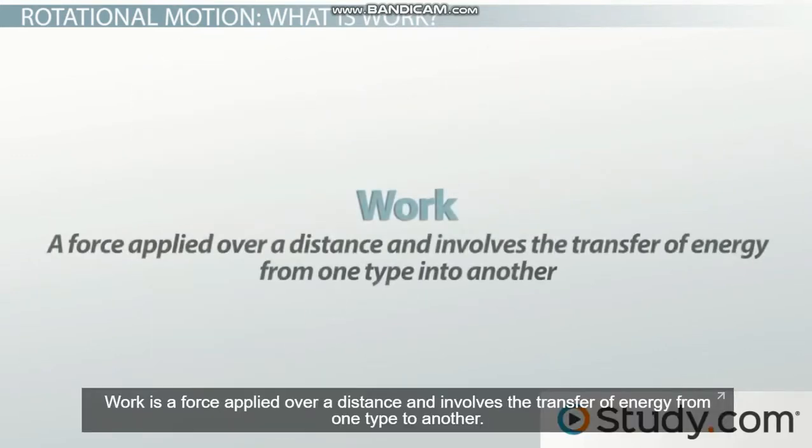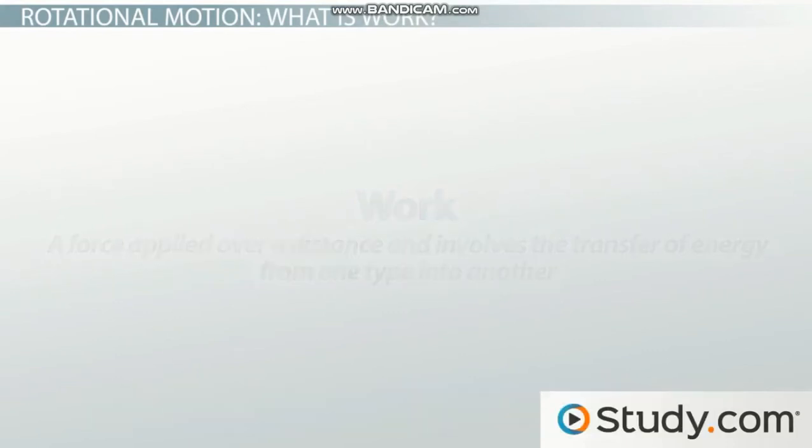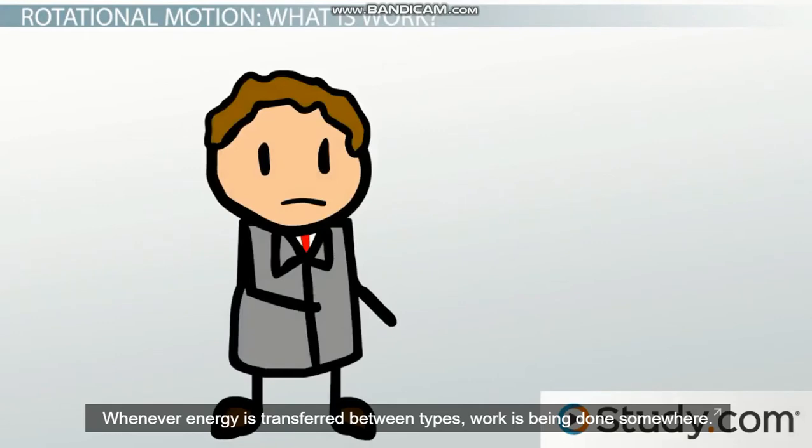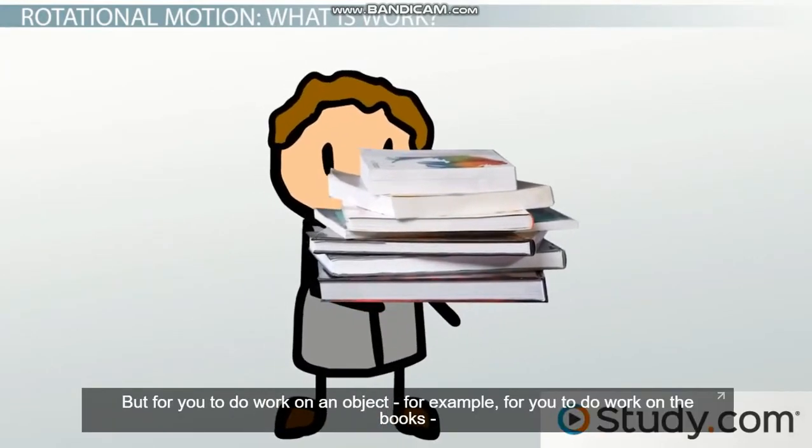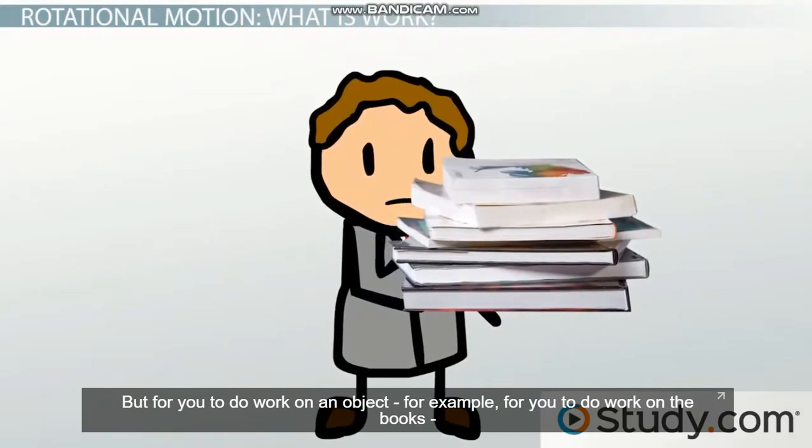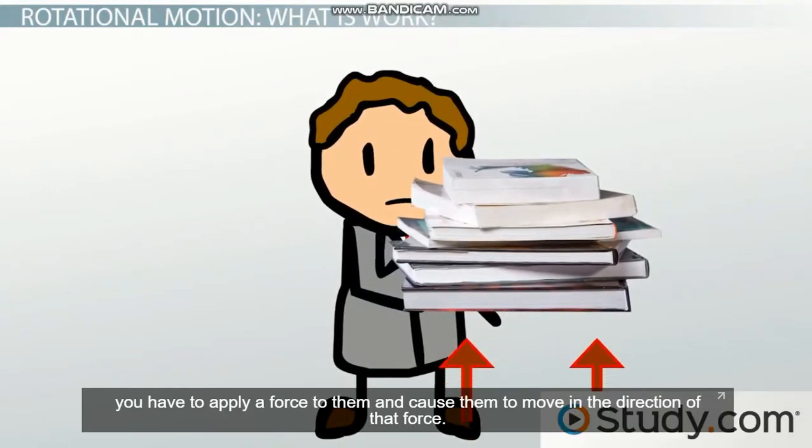Work is a force applied over a distance and involves the transfer of energy from one type to another. Whenever energy is transferred between types, work is being done somewhere. But for you to do work on an object, for example the books, you have to apply a force to them and cause them to move in the direction of that force.